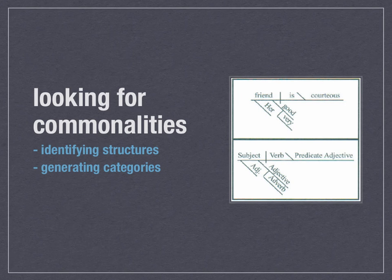Structuralism really is looking for commonalities, for common structures that underlie stories. There are two roles that structuralism plays. One is identifying structures and then generating categories from those structures. If you look at the two diagrams here, you have a diagram of the sentence 'her very good friend is courteous,' and below that is the diagram where it's filled in with parts of speech. The reason that works is because of the grammatical structure — you could fill in any subject, verb, predicate adjective, etc., in those places and it would make sense.